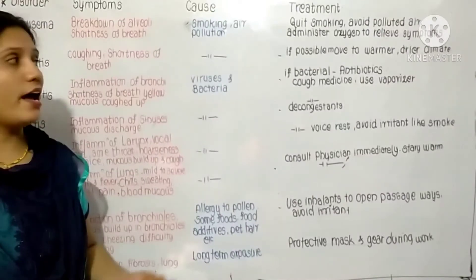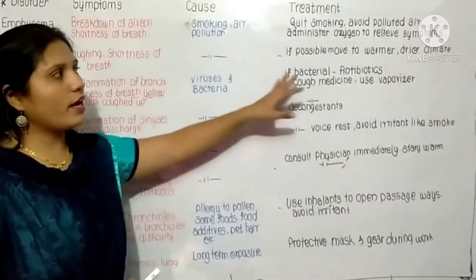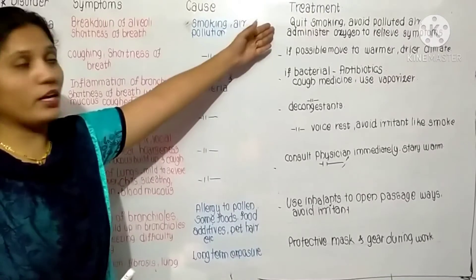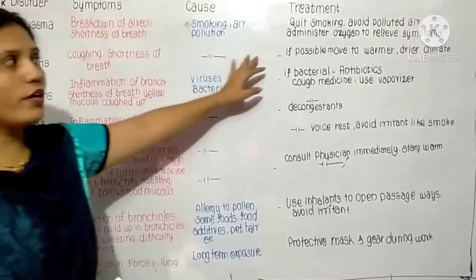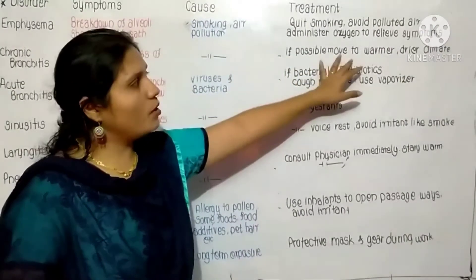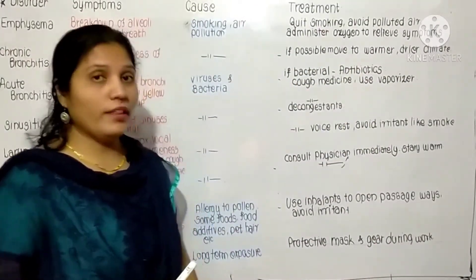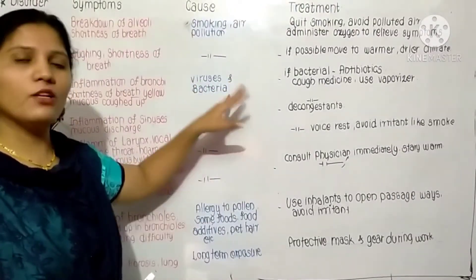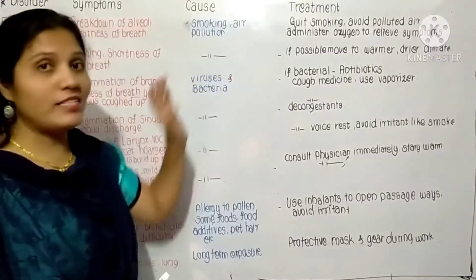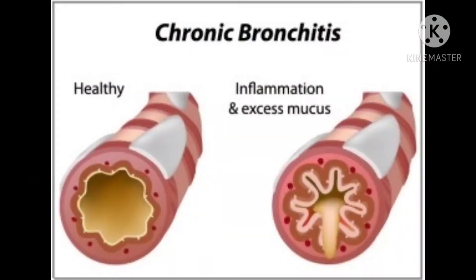For treatment of chronic bronchitis, the person has to move to a warmer and drier climate and quit smoking. Avoid polluted air and, if possible, move away from the city to an area where pollution is less. In the diagram, it is shown that in the affected bronchiole there is presence of excess mucus.